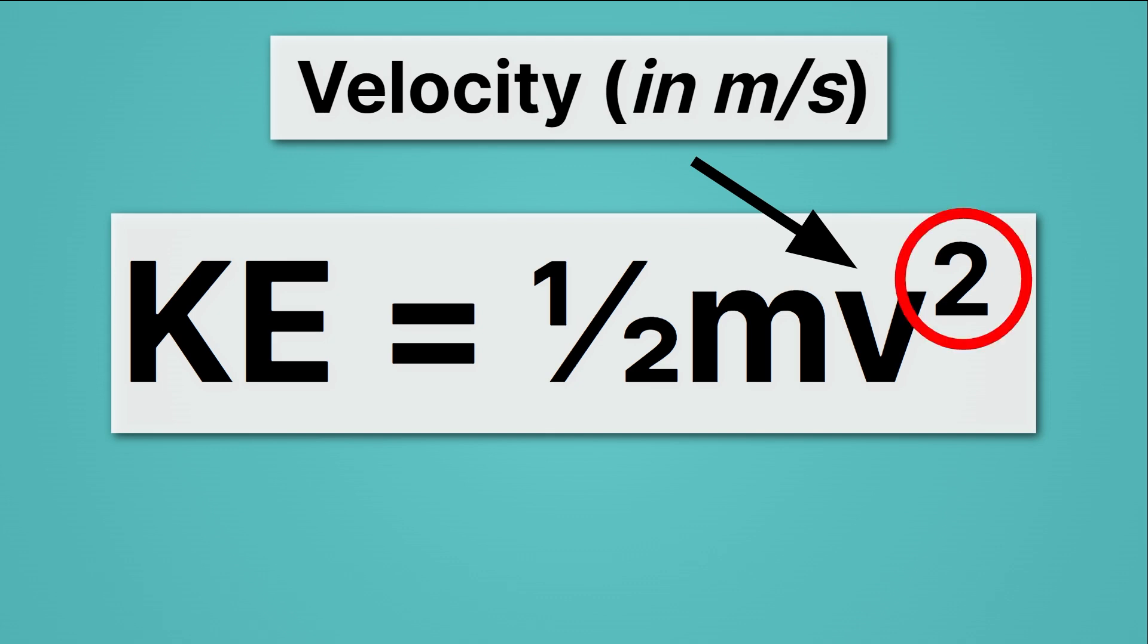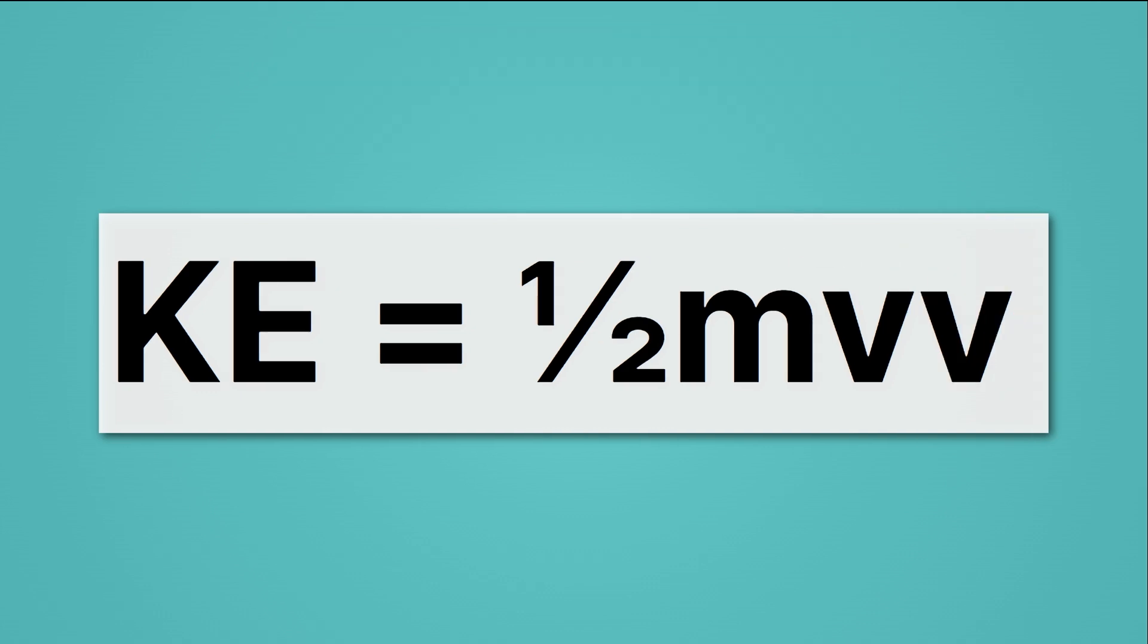But notice that the velocity is squared. And when something is squared, that just means we have it twice in the equation. So we could literally write it as KE equals one half mvv, v times v. That means velocity counts twice and it matters more in determining the kinetic energy than mass.